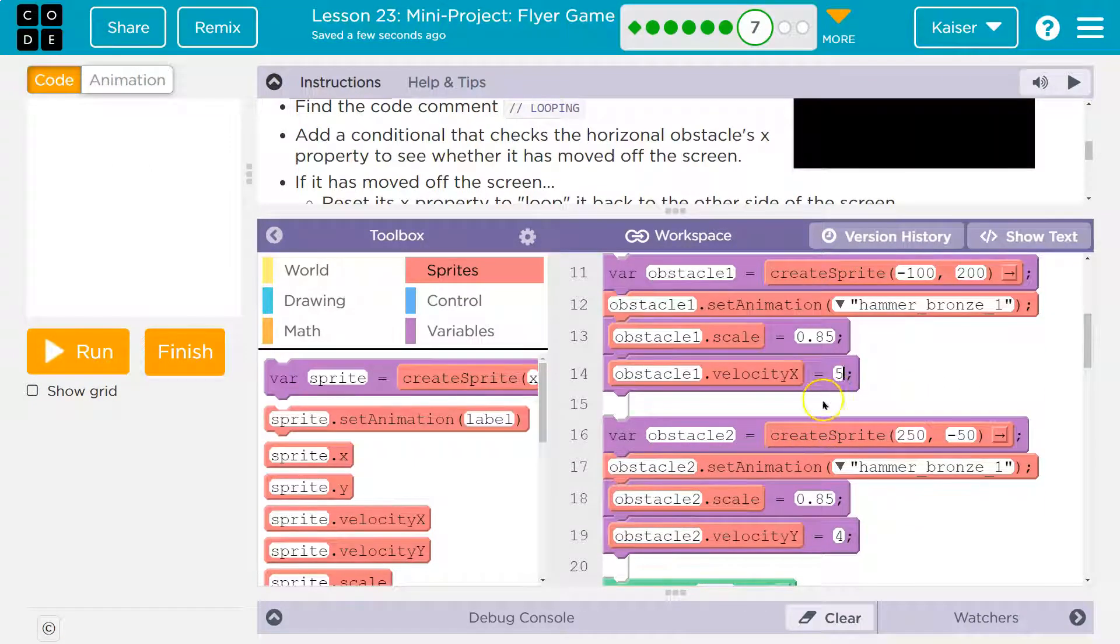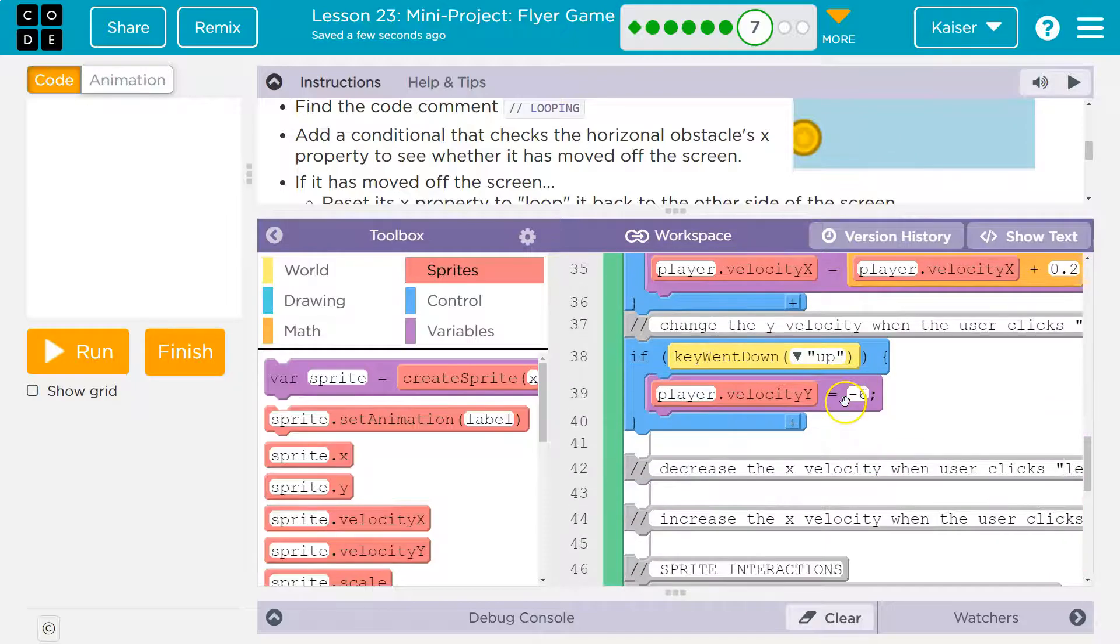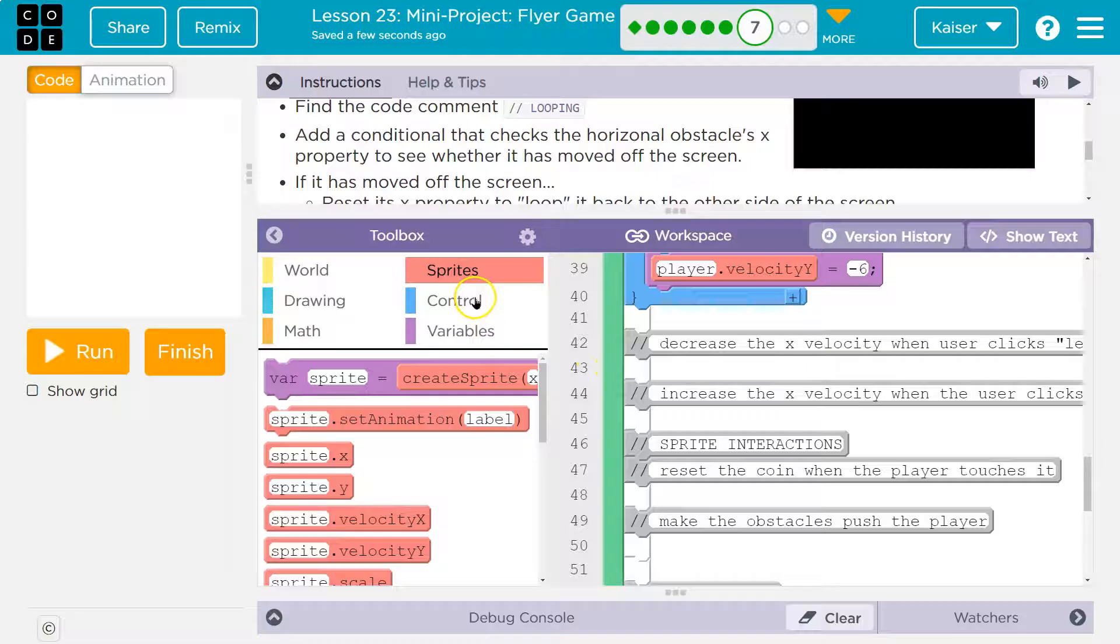I need them to move faster as well, so I'm going to speed them up. Let's do a five and a five. Now I need them to loop. How do we make something loop? I need to check if it is off the screen. Notice what I just said: if, if, if, if. So you should be screaming conditional, which is under control.